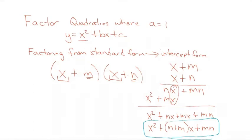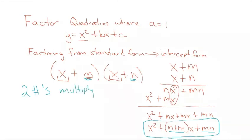What we're going to be doing today — hopefully a review for most of you — is looking for two numbers m and n that multiply to the last term in my quadratic and that add to the middle term of my quadratic. So: two numbers that multiply to the last term and add to the middle.